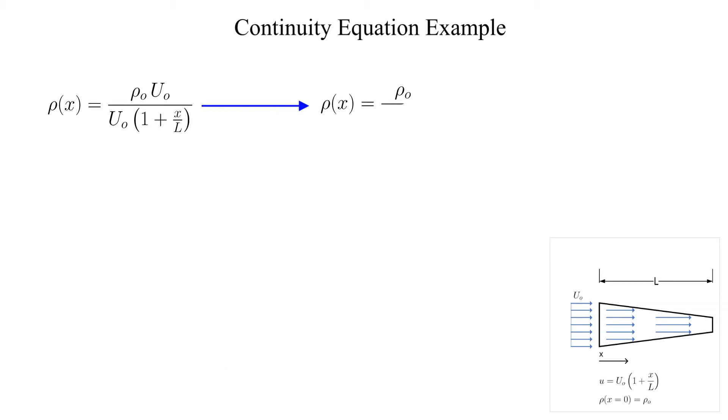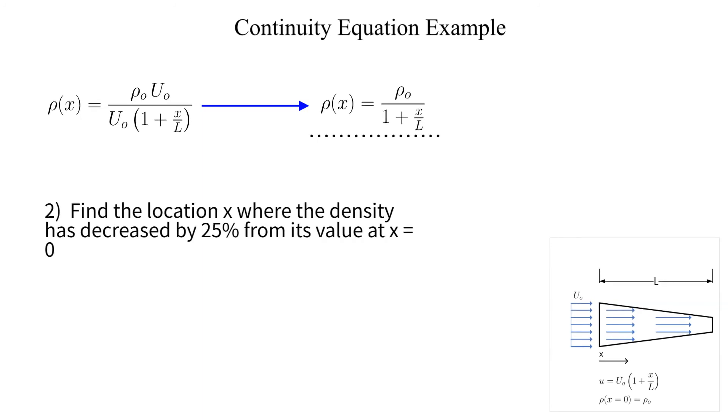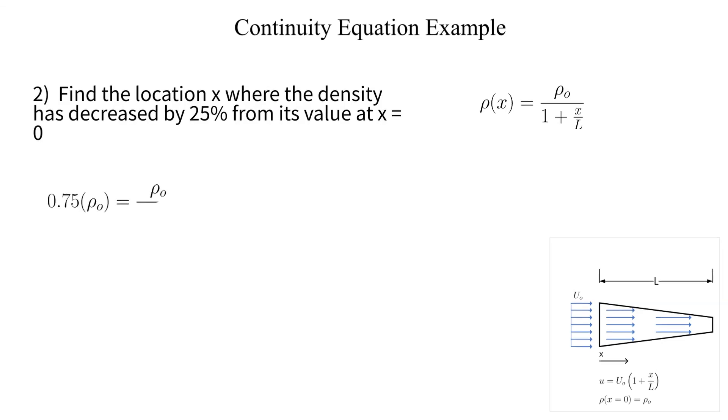Next we want to find the location where the density has decreased by 25 percent from its initial value. The solution is obtained with some simple algebra. We set the density equal to zero point seven five times the initial density rho naught and solve for the corresponding location. That location is one-third the length of the nozzle.